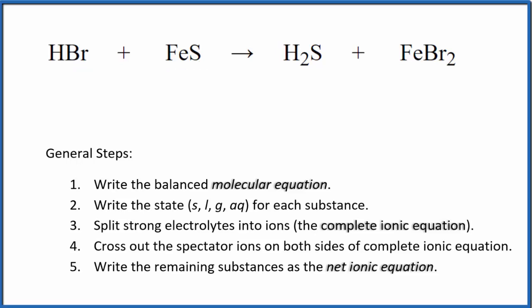So to do this, first we need to balance the molecular equation. I can see I have one hydrogen here and two hydrogens here, so I'm going to put a 2 in front of the HBr. Those are balanced: 2 bromines, 2 bromines. I have 1 iron here and here, those are balanced. 1 sulfur, 1 sulfur. This is the balanced molecular equation.